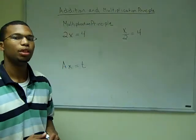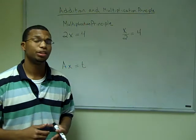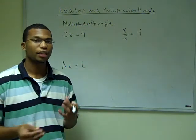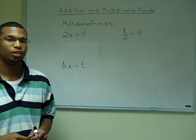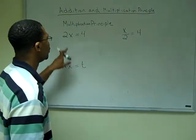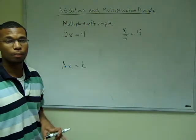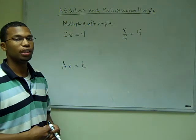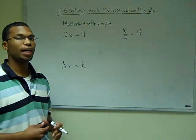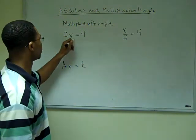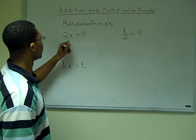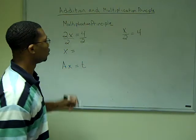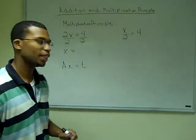The multiplication principle allows you to move factors, which are separated by multiplication and division. In our first example, we have 2x = 4. Since 2 is being multiplied to x, to undo what's being done to x, we're going to divide both sides by 2. Once we divide by 2, we get x = 2.